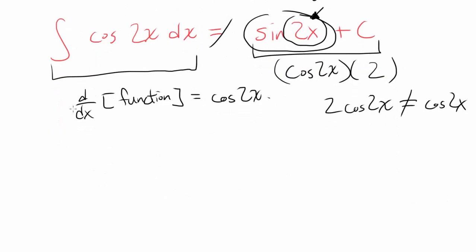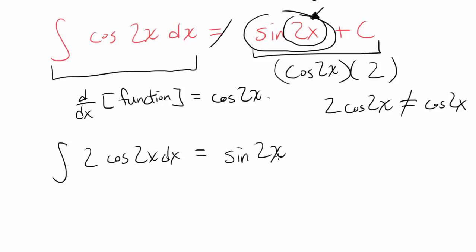But let's say the question was: what is the integral of 2 times cosine of 2x dx? What do we have to differentiate to get 2·cosine(2x)? We just figured that out — you have to differentiate sine of 2x to get 2 times cosine of 2x. So in this case, the answer is sine of 2x.